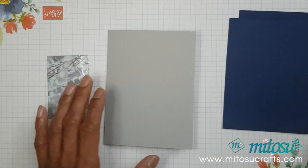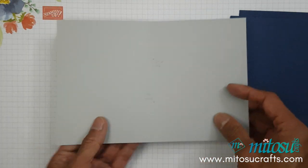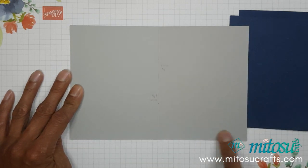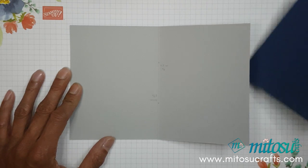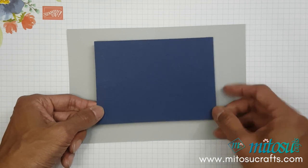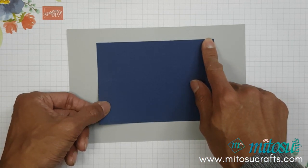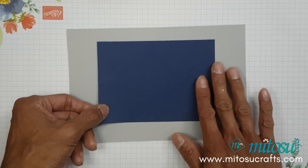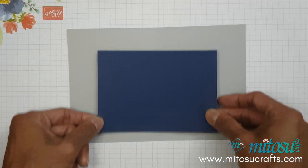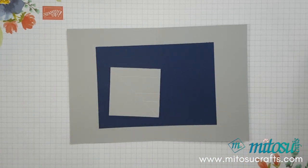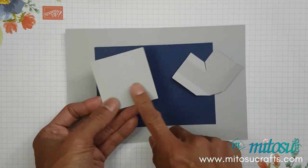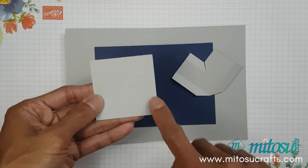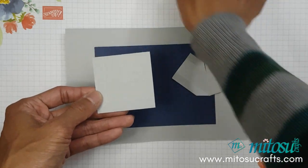My card base is 21 centimeters by 14 centimeters—that's eight and a quarter by five and a half inches. For my floating panel, it's 14 centimeters by 10 centimeters, which is five and a half by three and fifteen-sixteenths of an inch, or four inches would be fine. For the mechanism, which looks like this, I have a pre-scored and cut one. The measurement for that is six centimeters by six centimeters, or two and a half by two and a half inches.